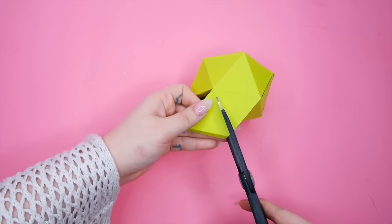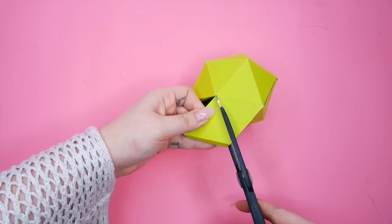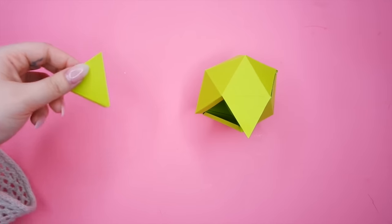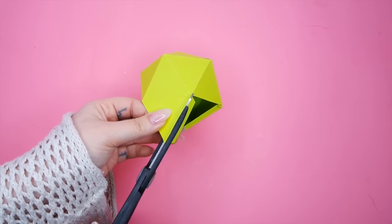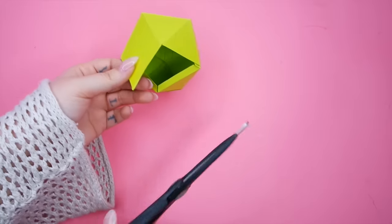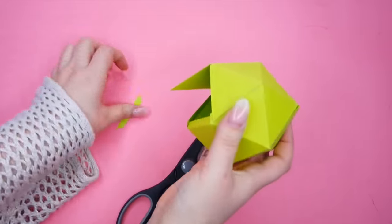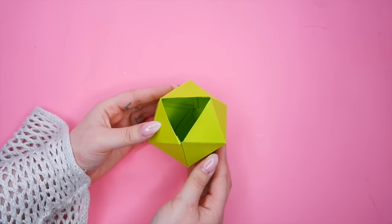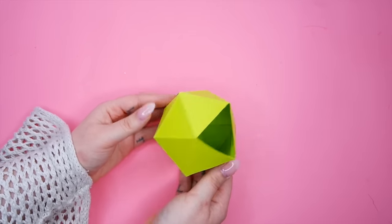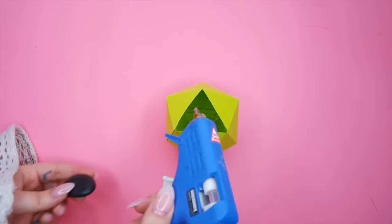Once you get to the end of your ball, you're left with two tabs that aren't stuck together. You're going to cut off one of the triangles. This will give us the opening for the makeup brushes.